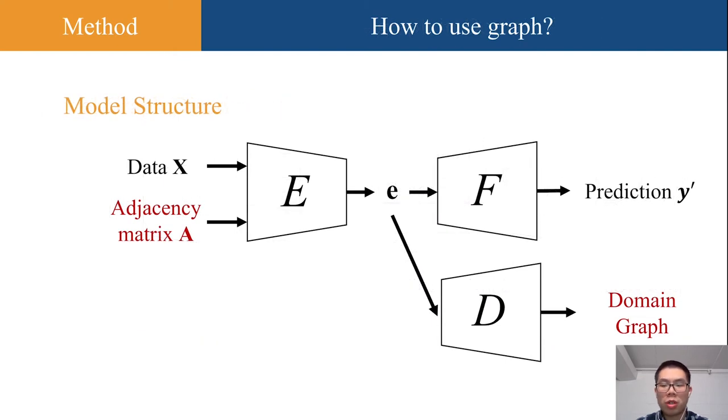Our model structure is shown here. We highlight the key difference between our model and other models in red. It follows the adversarial learning framework, where encoder E, discriminator D, and predictor F play a min-max game.